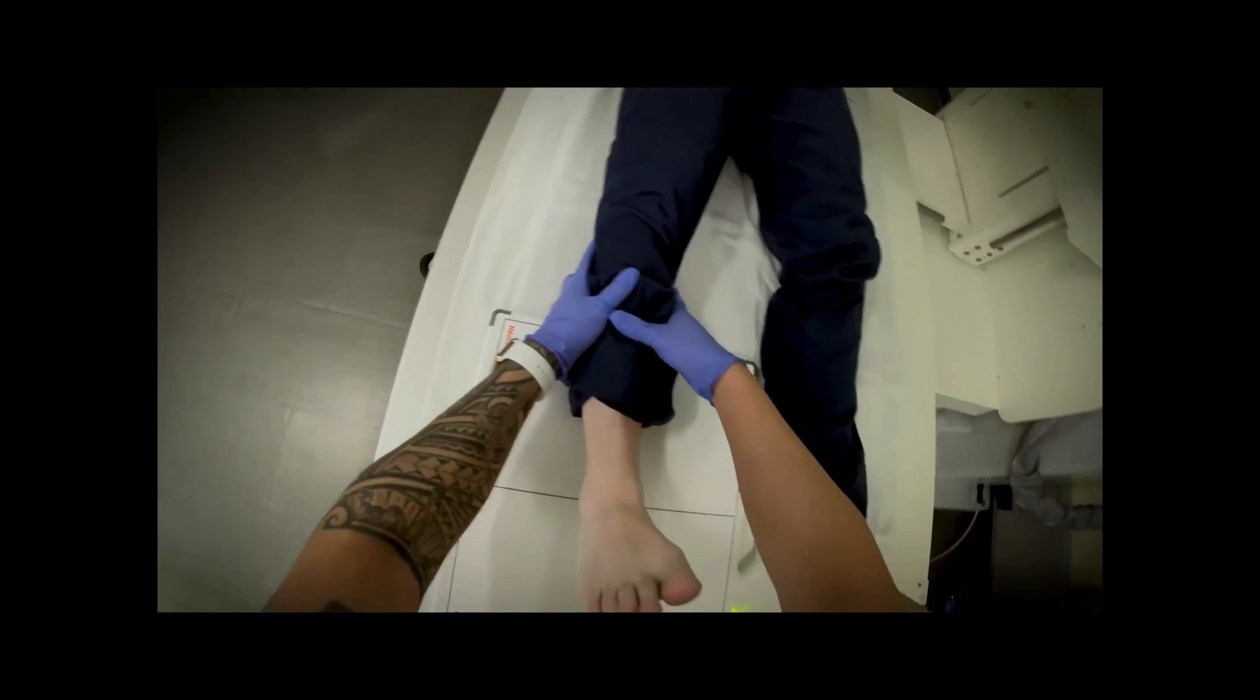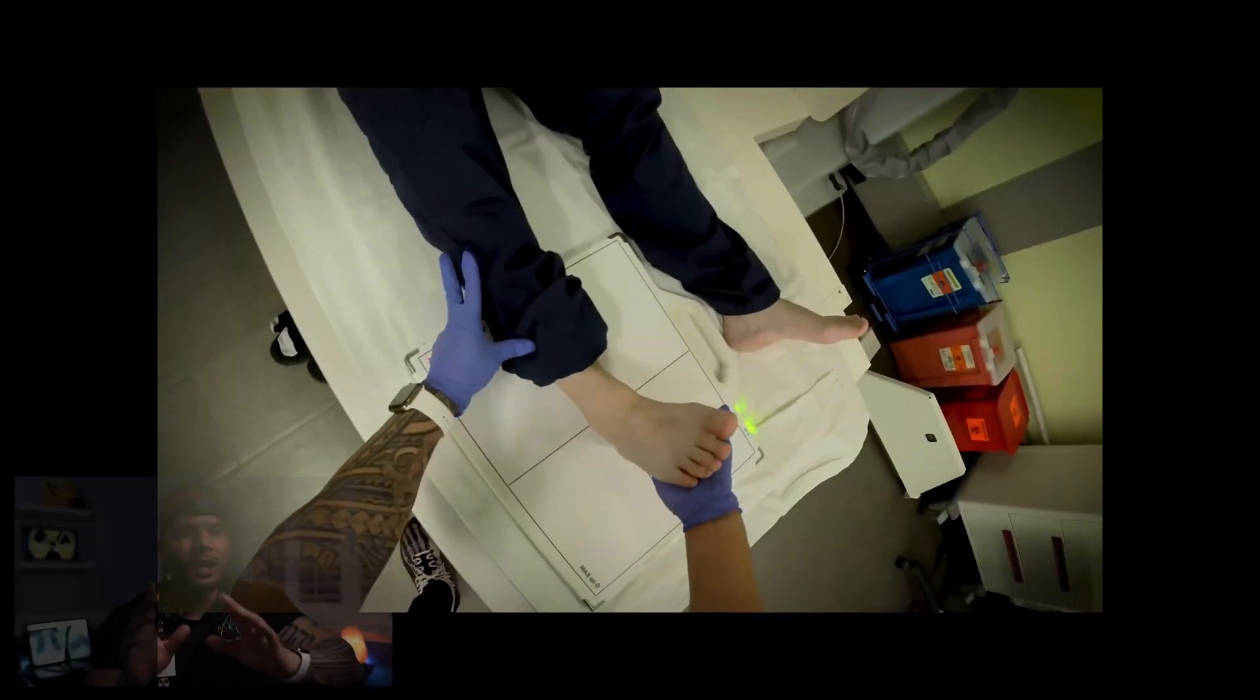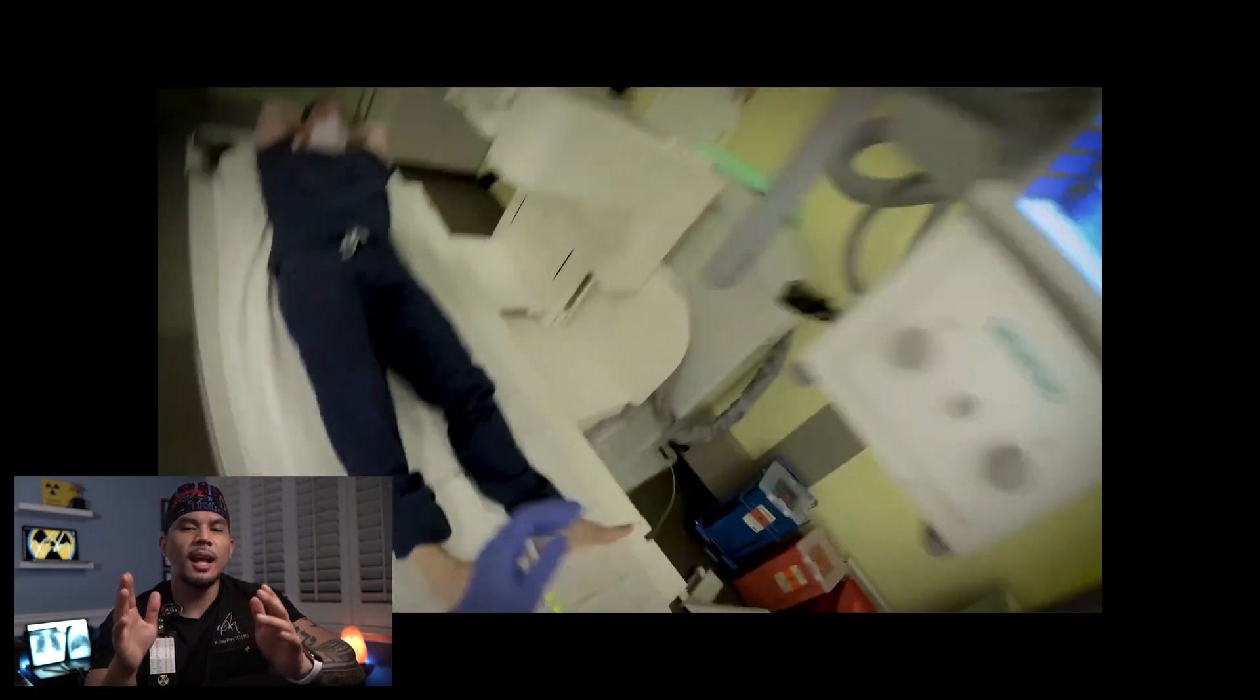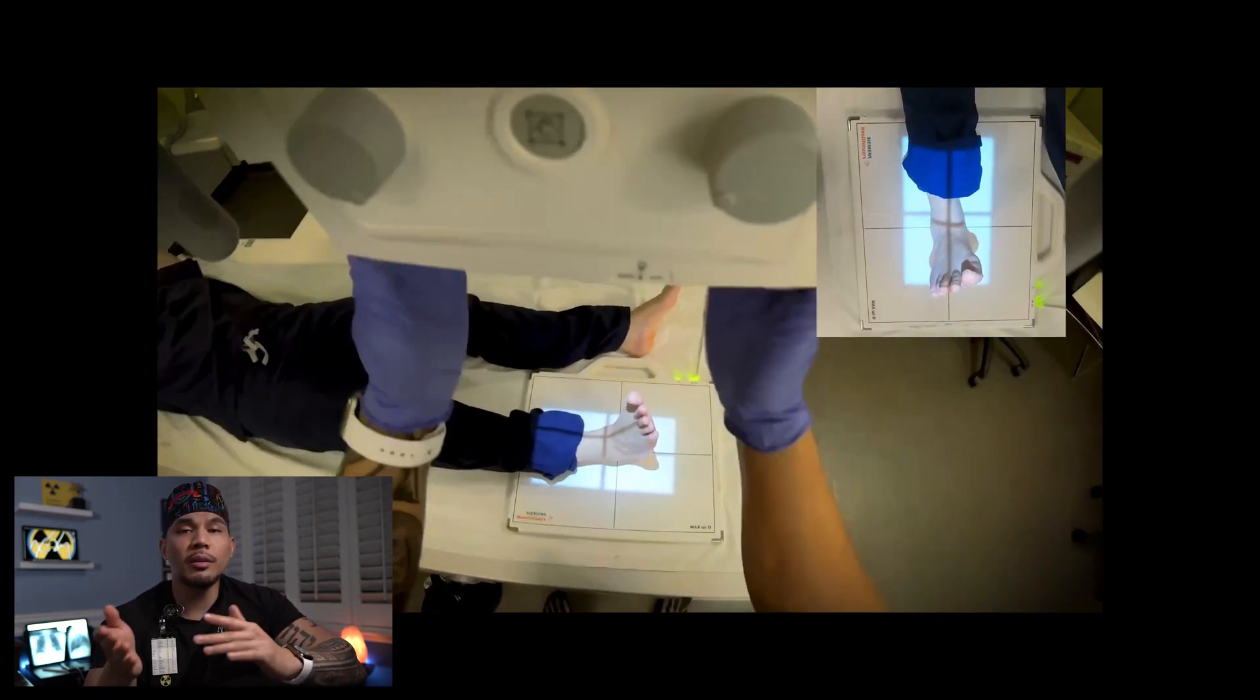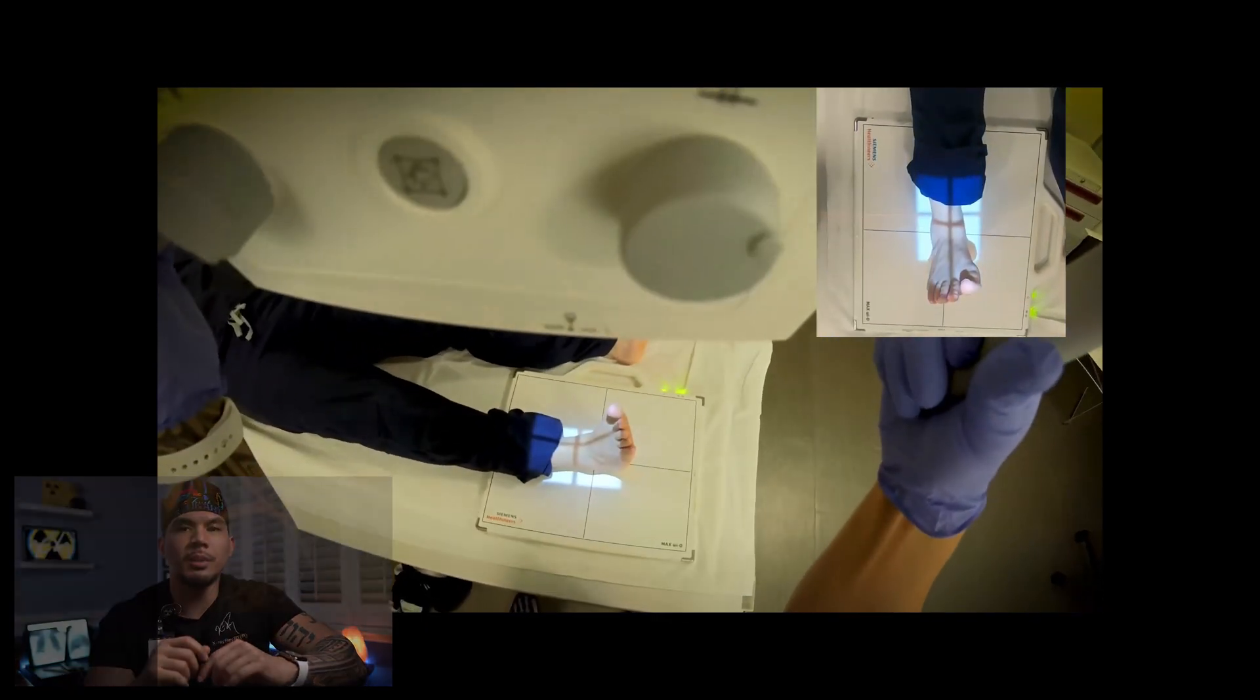And I'm just going to rotate your leg. Good. Collimation and central ray placement here can be kind of misleading as they tell you in Merrill's to aim between the malleoli. However, if you do this, you get a lot of the foot and not enough of the ankle. So I aim about two inches above.